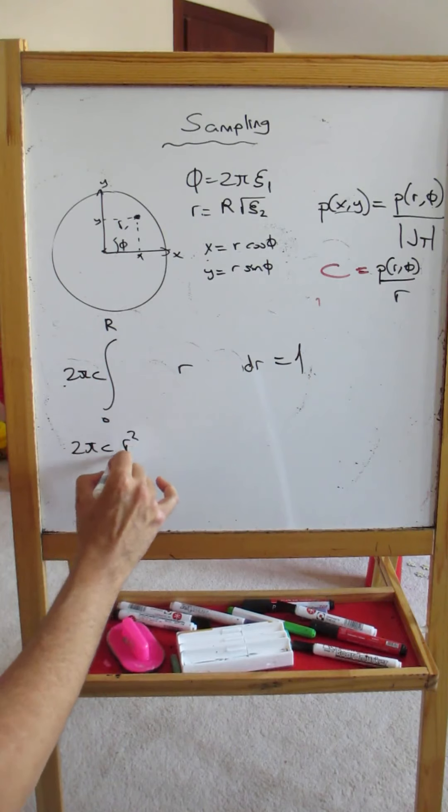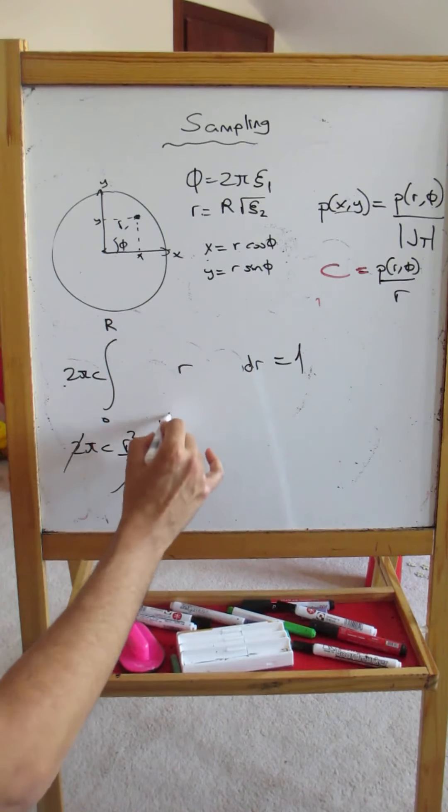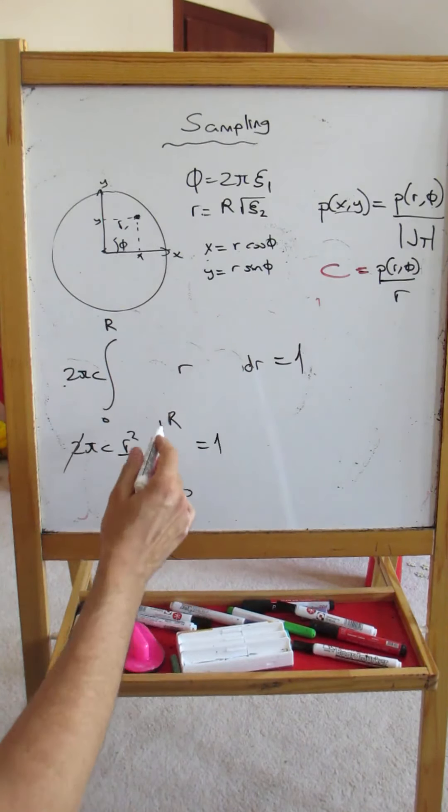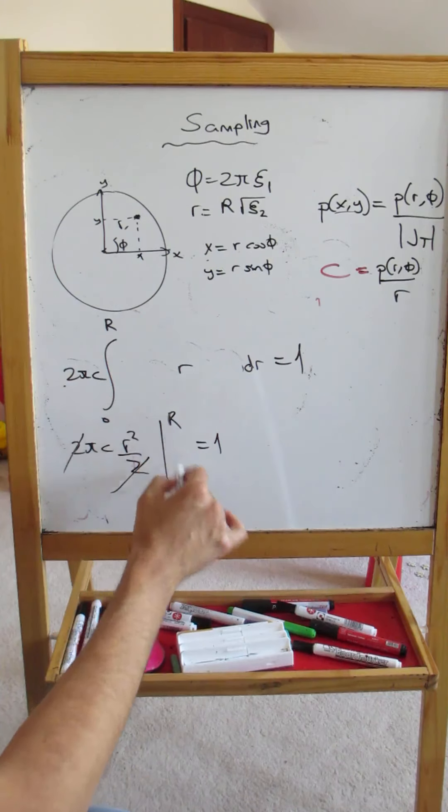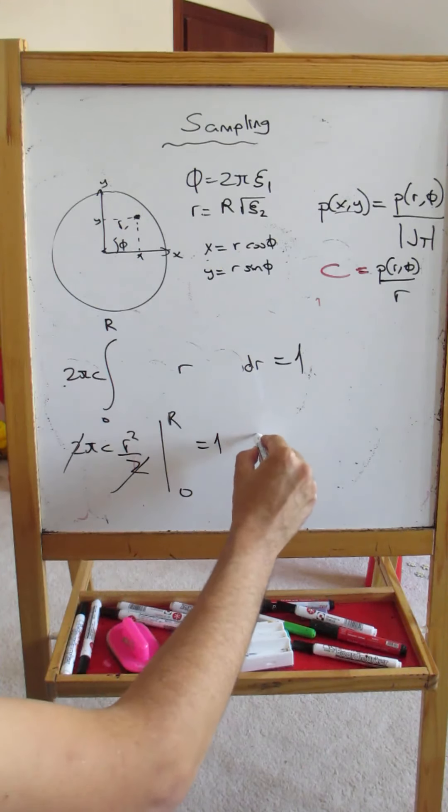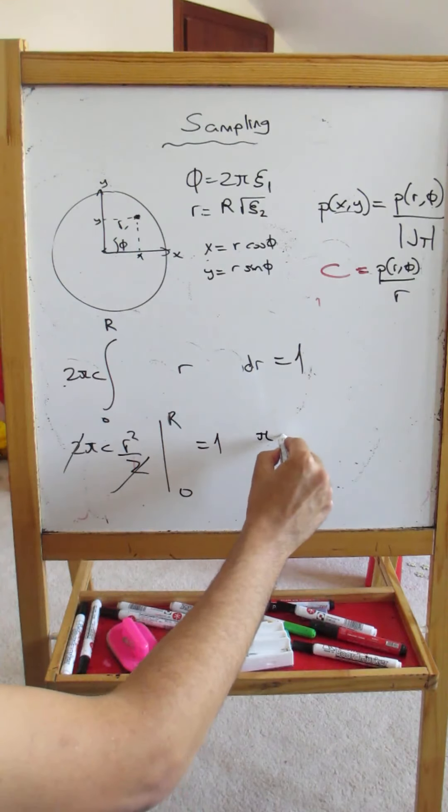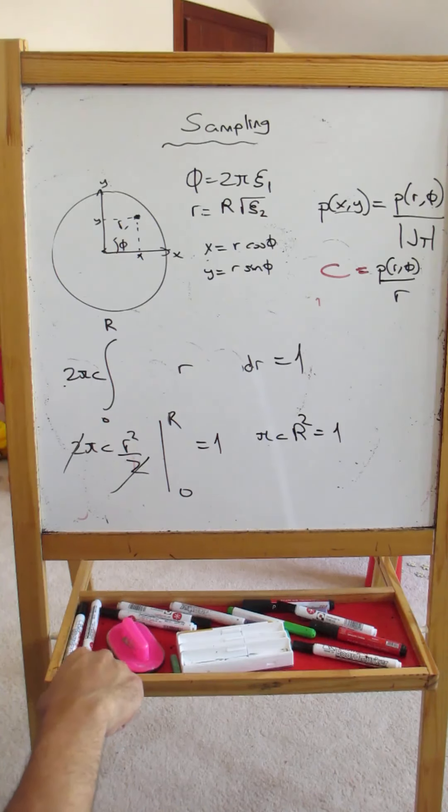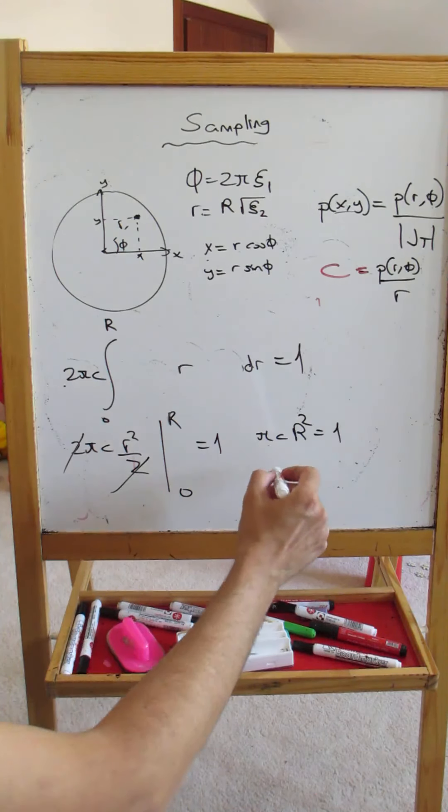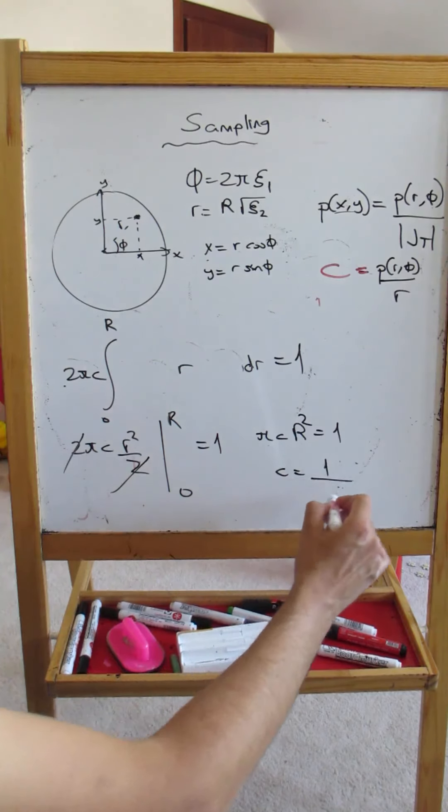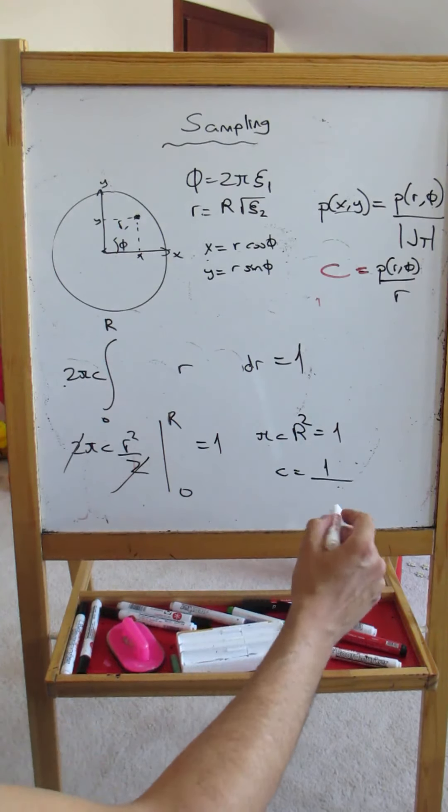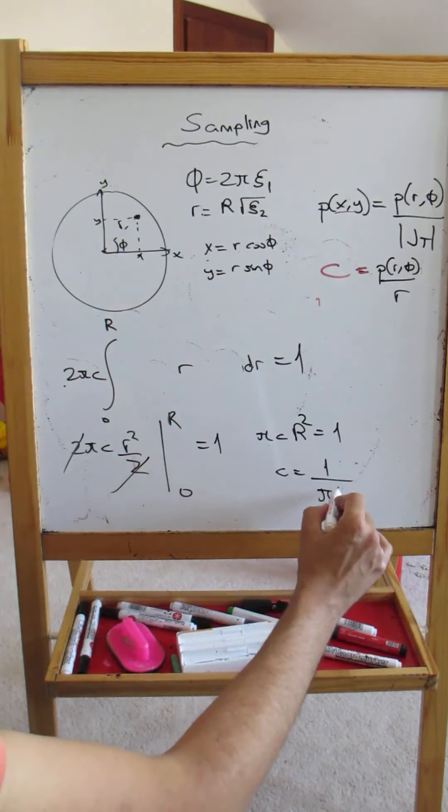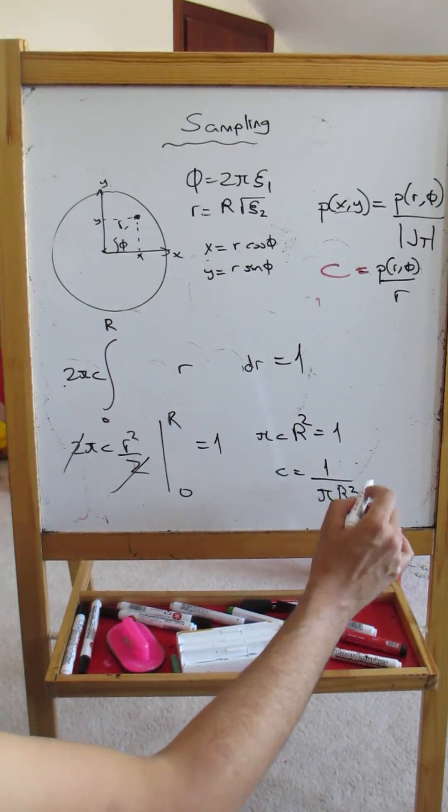Now let's proceed with the integration. This is 2πc times r²/2, let's cancel this out, from 0 to R. This equals one. If you do this substitution we are going to obtain πcR² equals one. So πcR² equals one, and from here we can see that c is equal to one over πR².